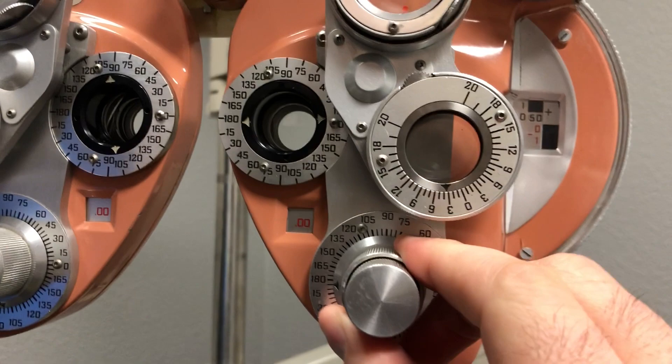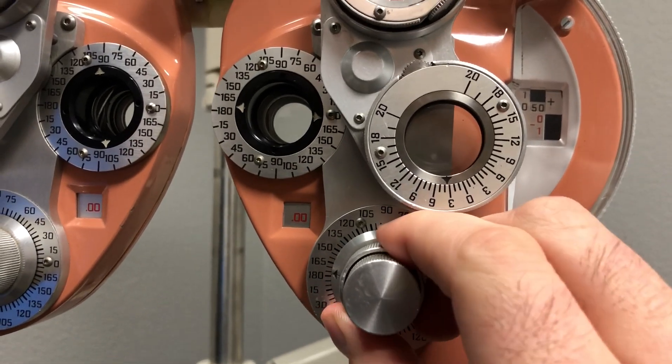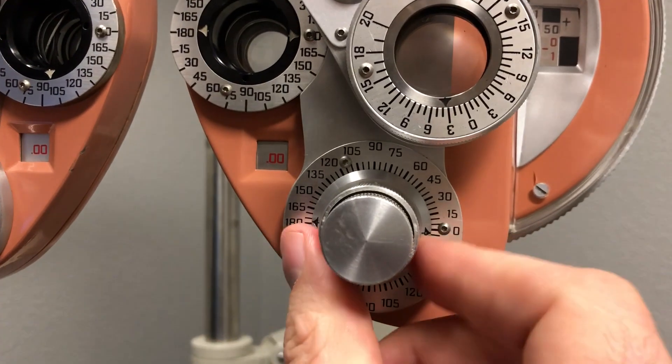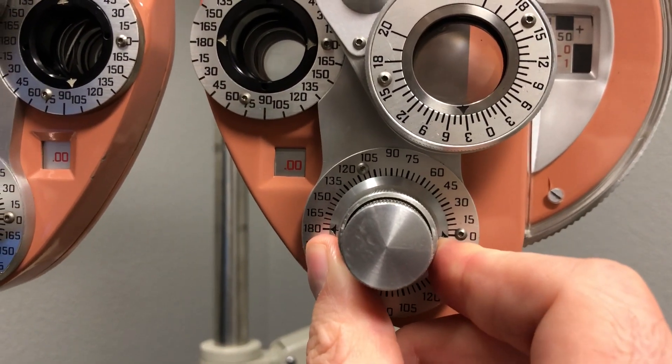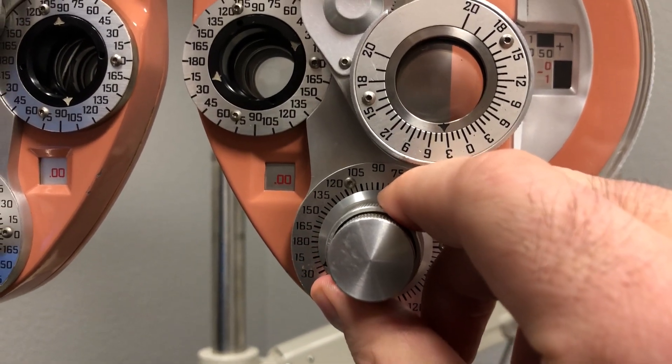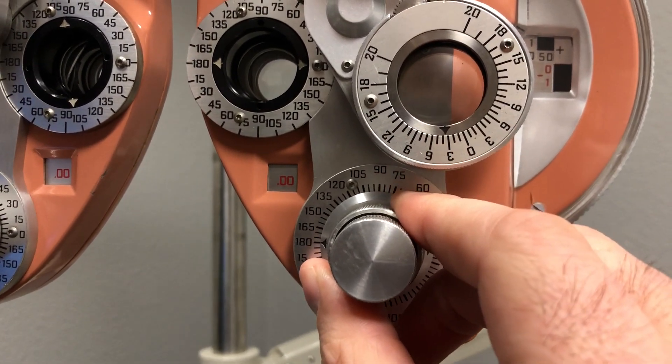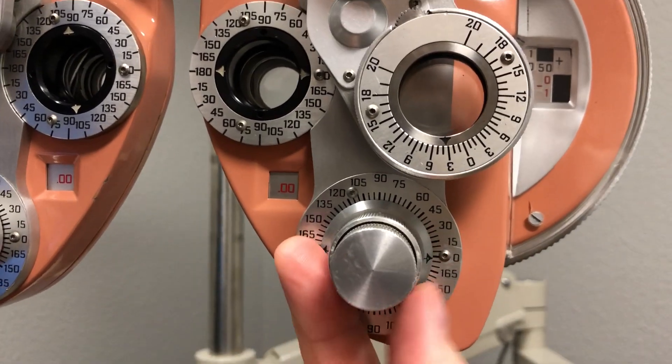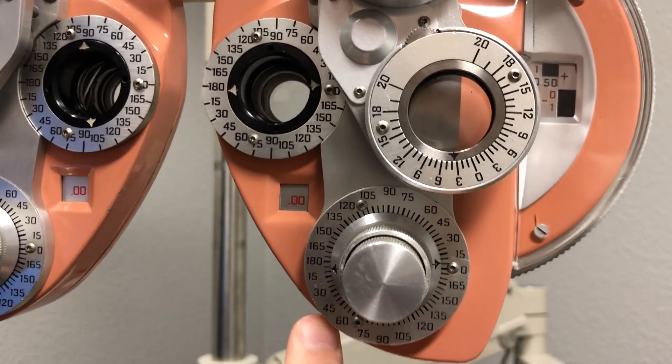We have axis of cylinder going from 180, so zero is actually designated at 180. You'd think it would go to 360 all the way around, but it doesn't. Once you go past 180, it goes to zero.